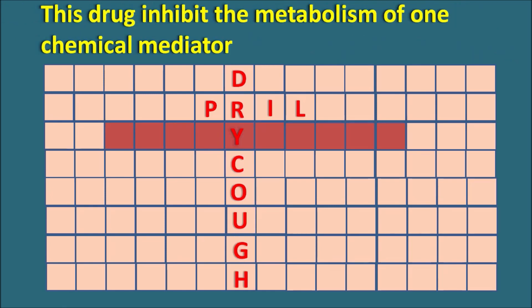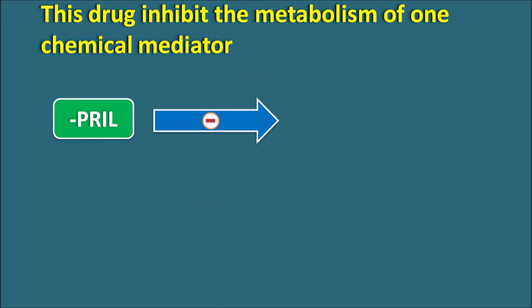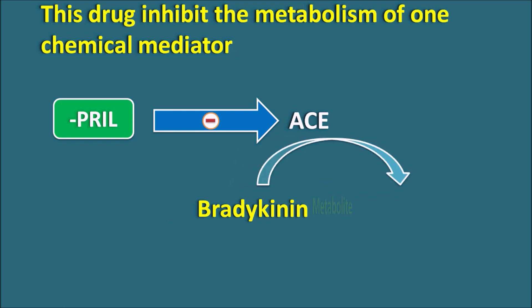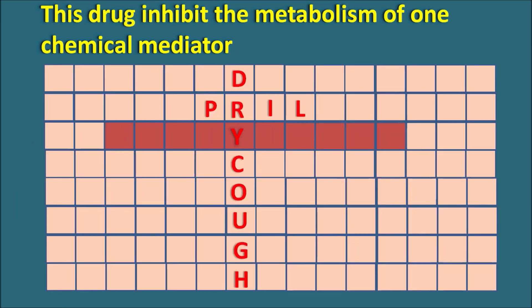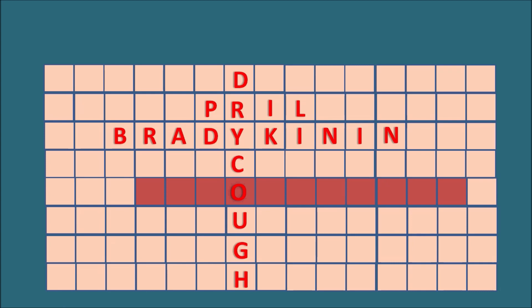The third block: this drug inhibits the metabolism of one chemical mediator. ACE inhibitors inhibit the angiotensin-converting enzyme, which is responsible for the conversion of angiotensin I to angiotensin II. But this enzyme also metabolizes bradykinin into its metabolites. Since PRILs inhibit the ACE enzyme, they inhibit the metabolism of bradykinin, causing its accumulation — which results in dry cough. The right answer for this block is bradykinin.